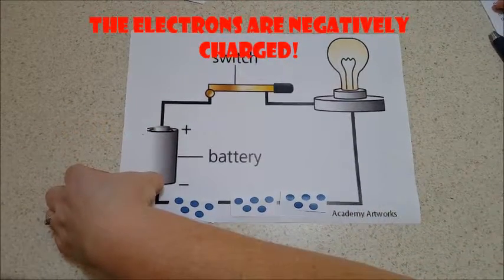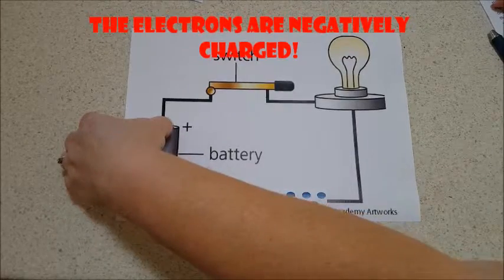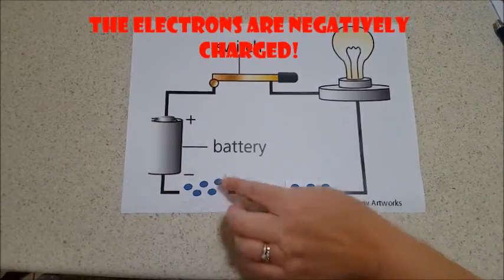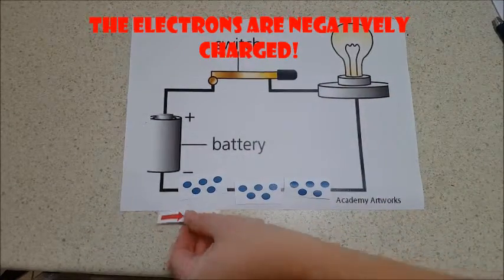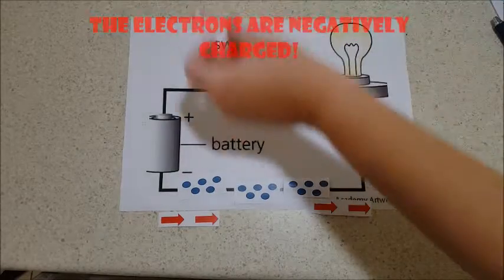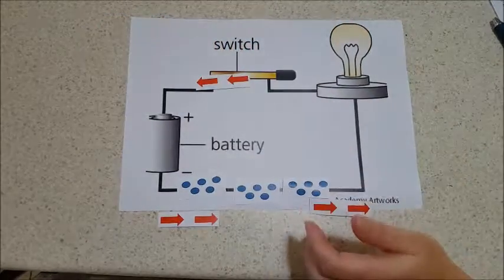The electrons in the wire are attracted to the positive side of the battery. Therefore, the battery pushes the electrons away from the negative end and pulls it towards the positive end of the battery.